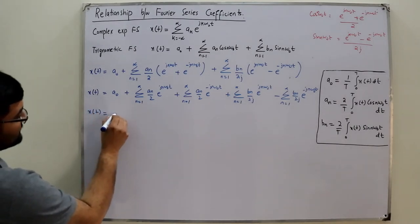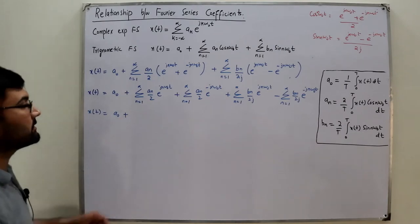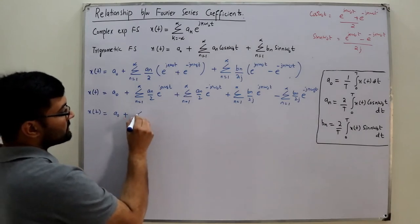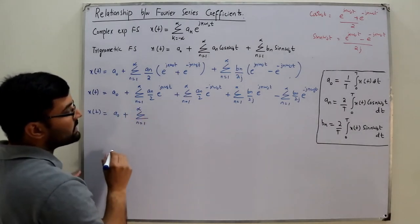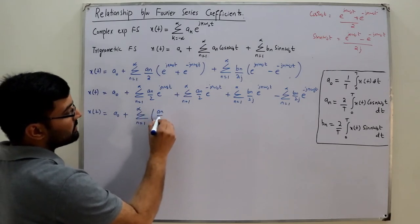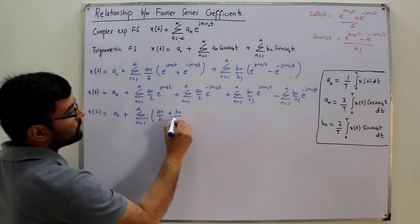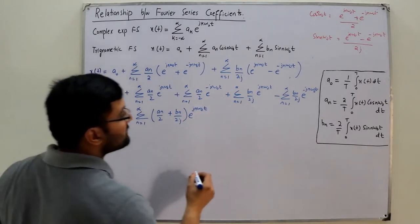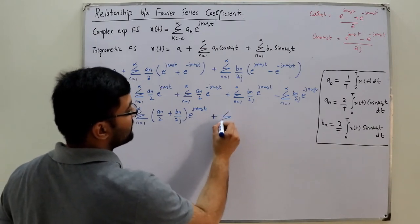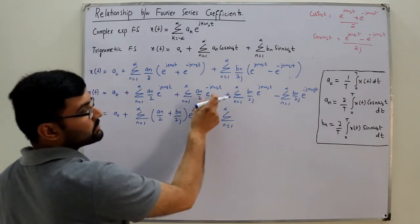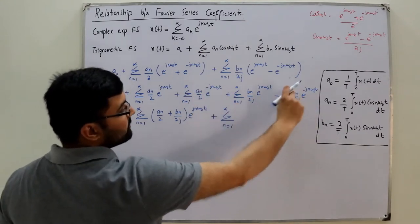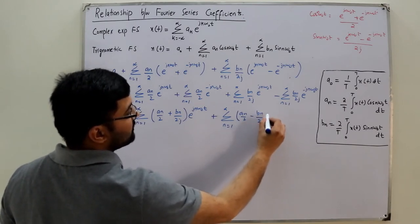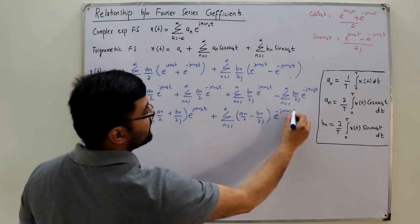Now combining the similar frequency terms, both summations run from n=1 to infinity. I take the coefficients common: (a_n/2 + b_n/2j) with exponential(j*n*omega_0*t), plus summation n from 1 to infinity of (a_n/2 - b_n/2j) with exponential(-j*n*omega_0*t).